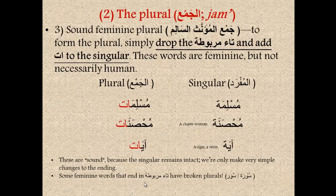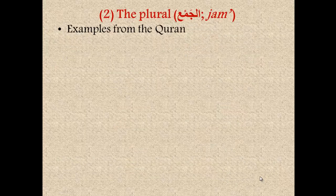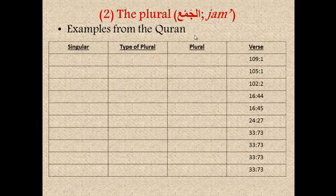Some feminine words that end in tamarbutah have broken plurals, so watch out. For example, the word surah — the plural is suwar. This is broken; it is not surahat. Pay attention to these and make sure to memorize them. Now let's take a look at some examples from the Qur'an to review the plurals. We have a number of plurals taken from various verses; we are going to talk about the type of plural, the category it falls under, and then the singular form.